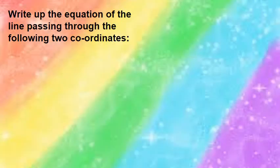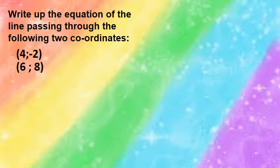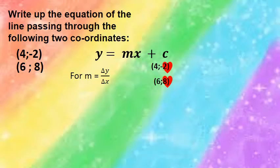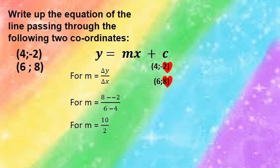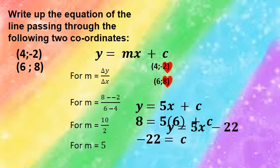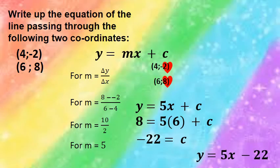Let's look at another example where they didn't draw the straight line — they just give you two points, which is very easy because we just work with those two points. For the gradient, change of y over change of x: starting at the bottom, 8 minus negative 2 over 6 minus 4 equals 10 over 2, so the gradient is 5. Replacing into the cookie cutter mold: y is equal to 5x plus c. I chose the coordinate (6, 8), replace x with 6 and y with 8, and c is negative 22. The equation is y is equal to 5x minus 22.